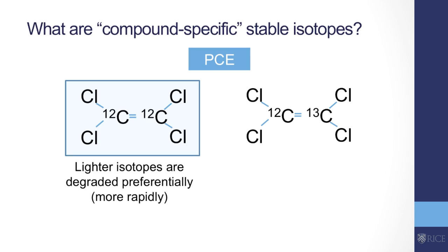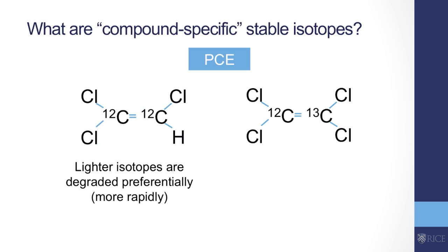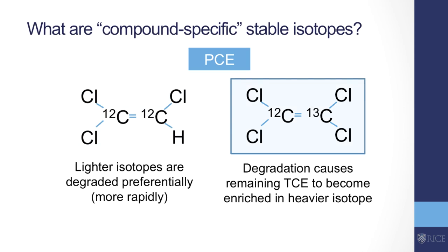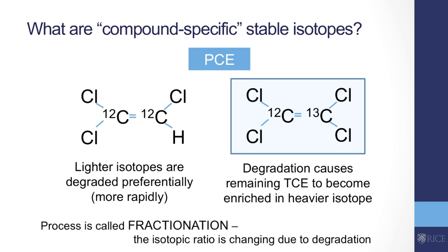That's basically what's called a kinetic isotope effect. There's a preference to degrade the lighter isotope, so PCE with C12 is more rapidly degraded to TCE. This preferential degradation causes the remaining PCE to become enriched and become heavier. Overall, we call this process fractionation — the change in the isotopic ratio due to degradation. We're usually talking about bulk isotopic fractionation, even though fractionation is usually position-specific. Think about TCE being degraded to DCE — it's usually working on a specific bond such that cis-1,2-DCE is the predominant product.